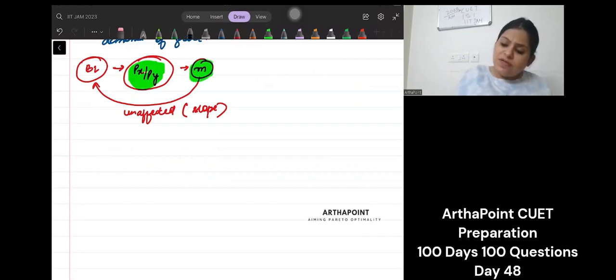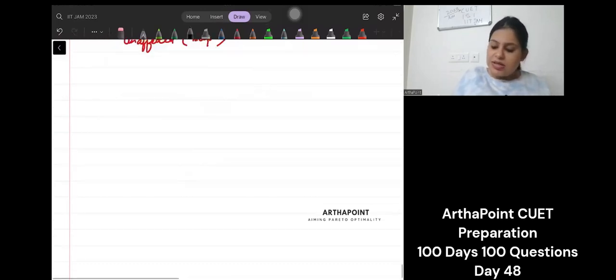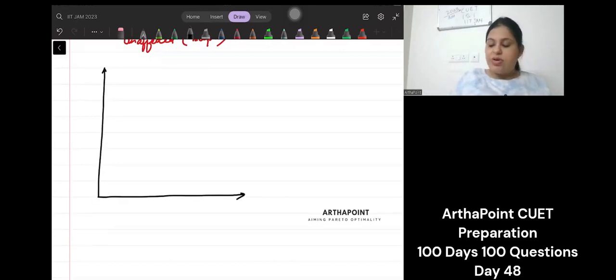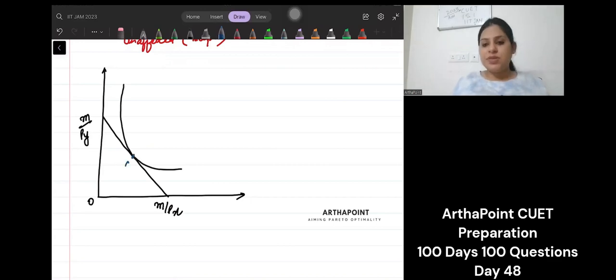If we talk about this, this is my initial budget line. This is M by PX point, this is M by PY point. And initially I am here. This is my equilibrium point, tangency condition of indifference curve and budget line. Now there is increase in income of the consumer.